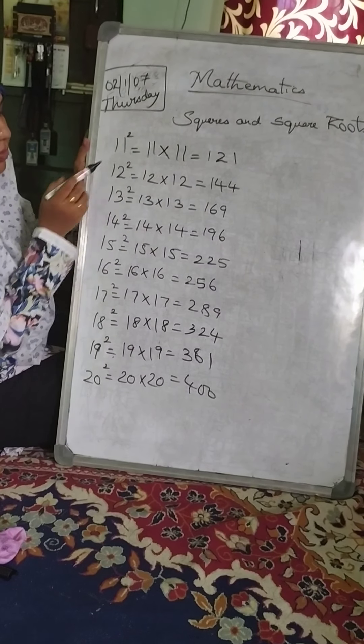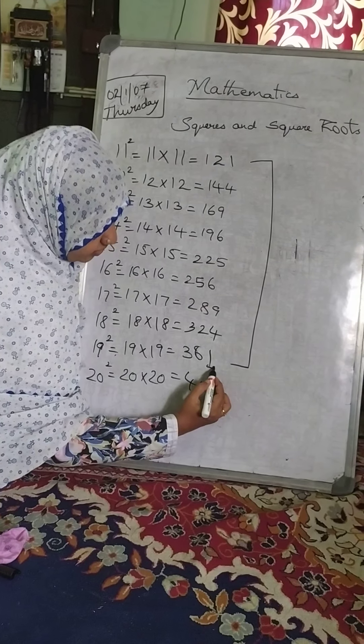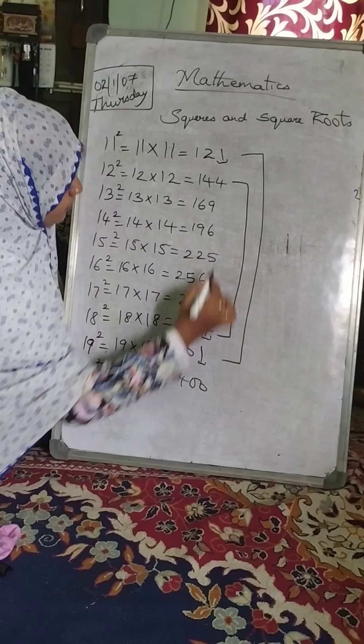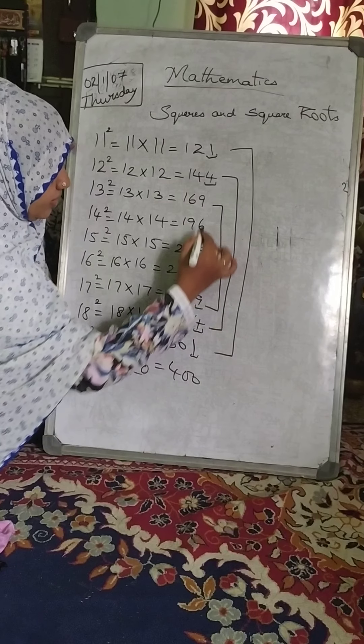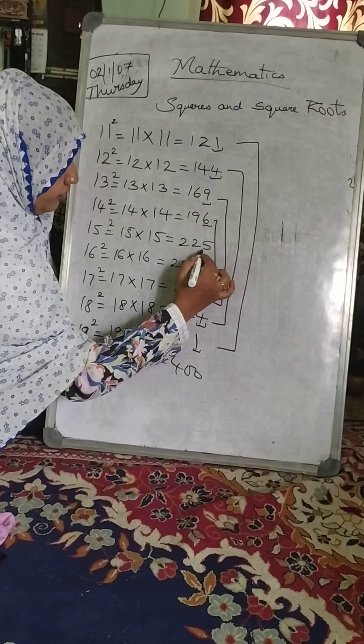So 11 square will be 121 and like that. Here also you see our relation children, 11 and 19s unit place will be 1, 12 and 18s unit place will be 4, 13 and 17s unit place is 9, 14 and 16s unit place is 6 and 15 will have 5.